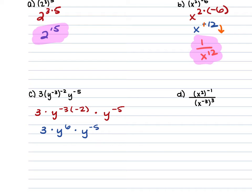We can multiply these straight across. Remember, when we're multiplying two terms like y to the 6th power and y to the negative 5th power, you have the same bases and you're multiplying, so you're going to be adding those exponents. So this 3 stays, and y to the 6th adds with the negative 5. Because 6 plus negative 5 is the same as 6 minus 5, which gives us 1 — leaving us with 3y.